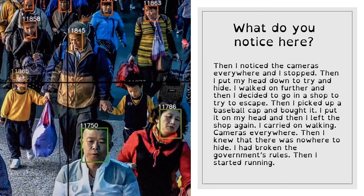Take a look at this paragraph. 'Then I noticed the cameras everywhere and I stopped. Then I put my head down to try and hide. I walked on further. Then I decided to go into a shop to try to escape. Then I picked up a baseball cap and bought it. I put it on my head and then I left the shop again. I carried on walking. Cameras everywhere. Then I knew that there was nowhere to hide. I had broken the government's rules. Then I started running.' There is so much you can do with that paragraph. The person who wrote this has obviously struggled to use discourse markers effectively because they're really relying on 'then' every single time. It's a time connective that just connects ideas together, but it doesn't give us any information and it's not very engaging when used over and over again.